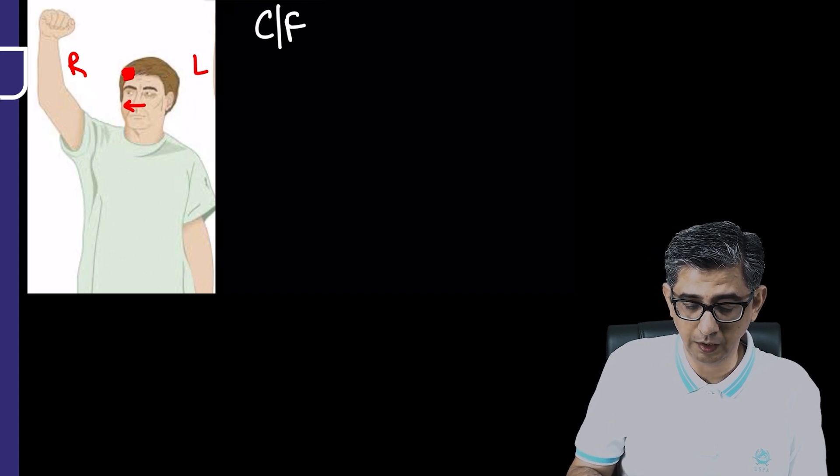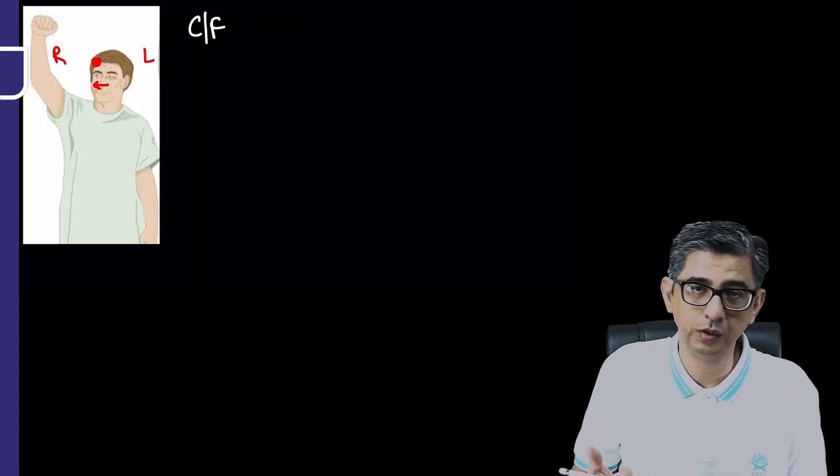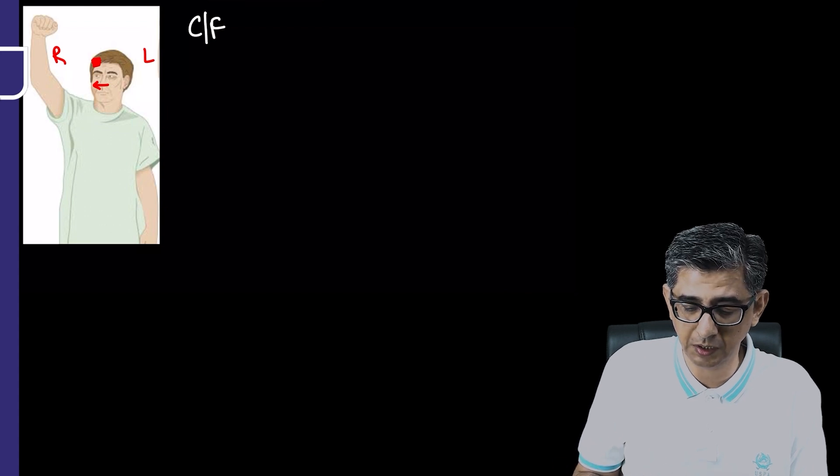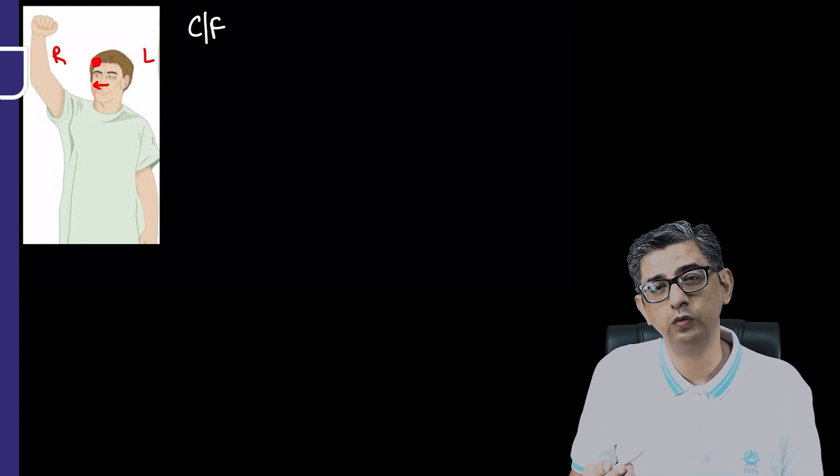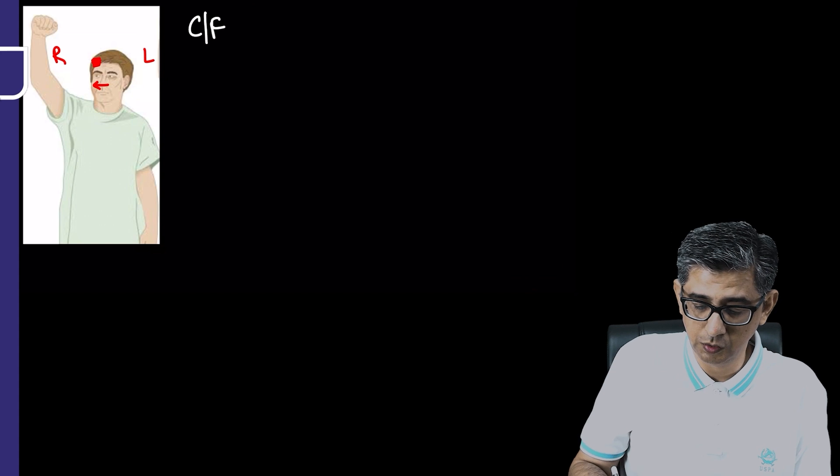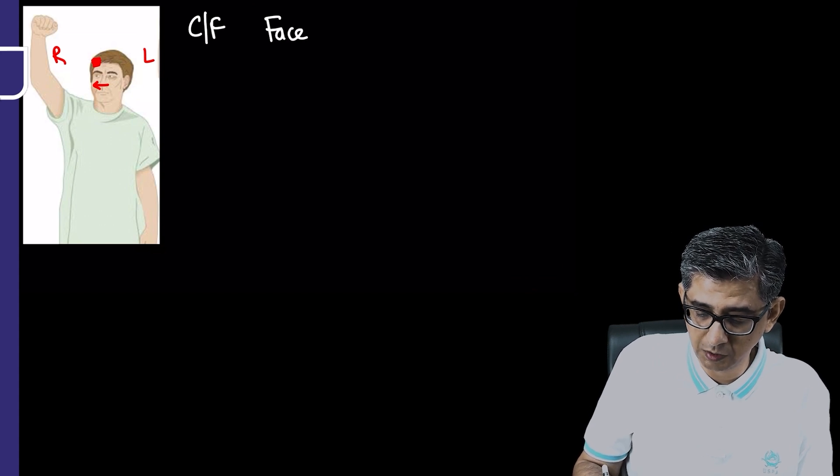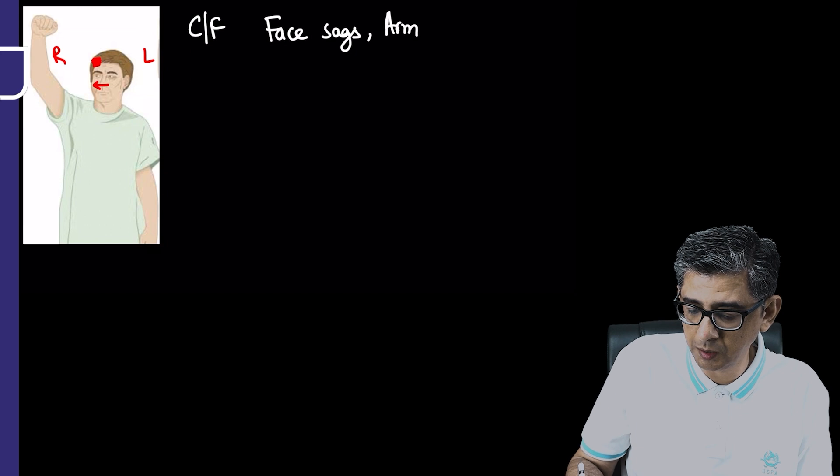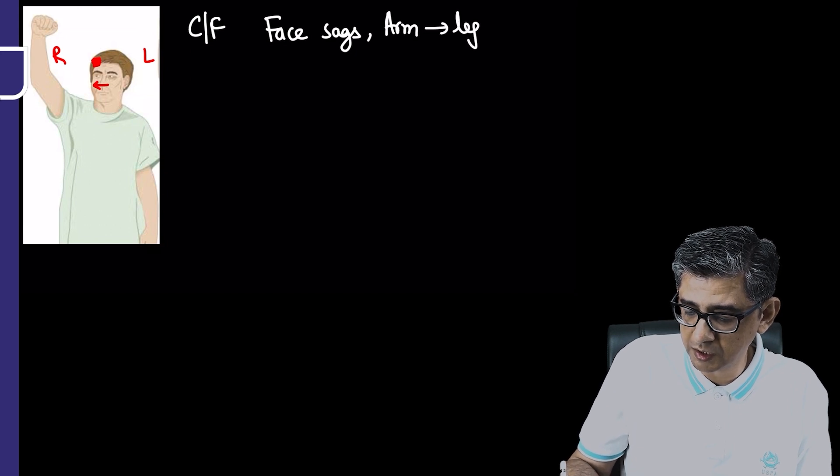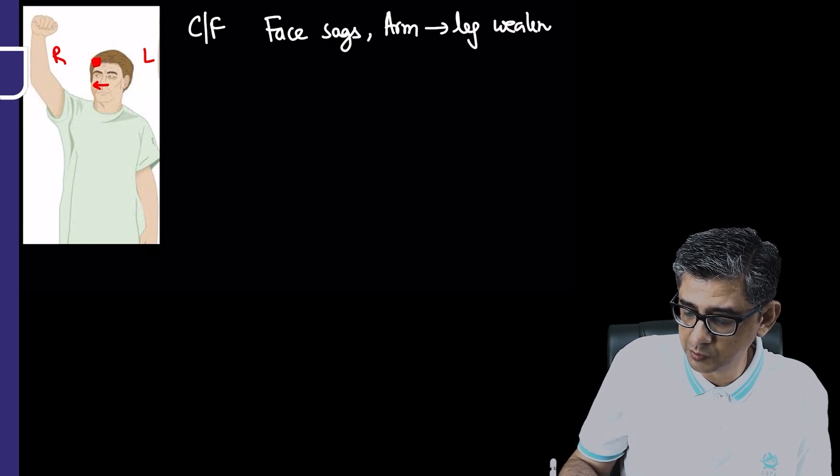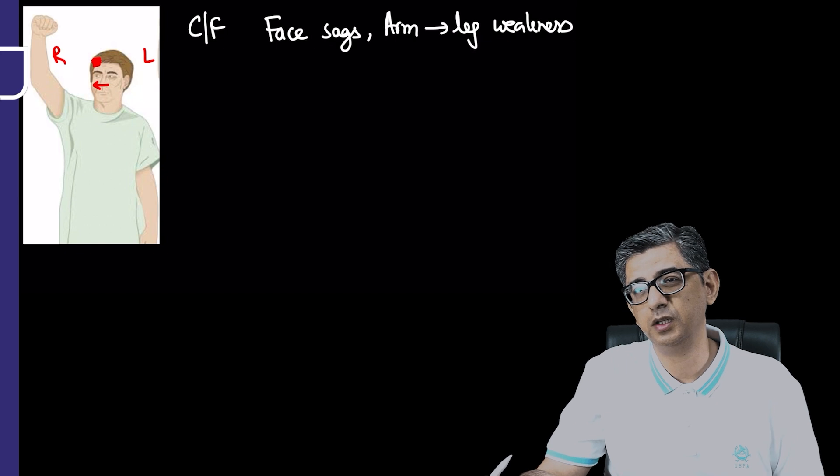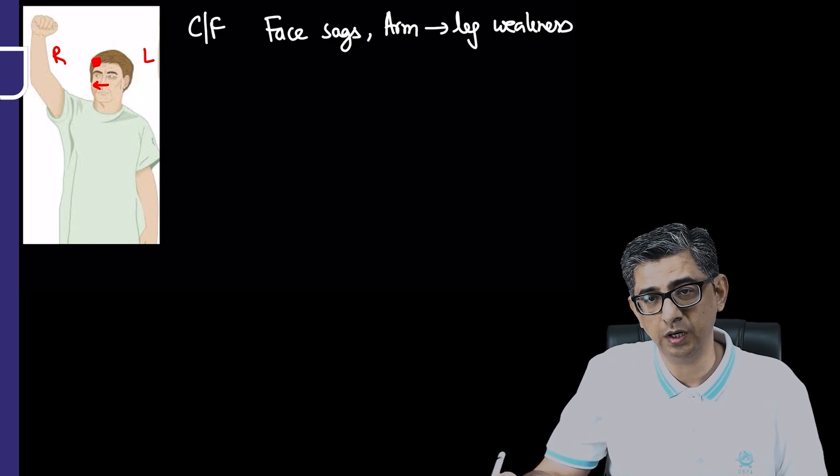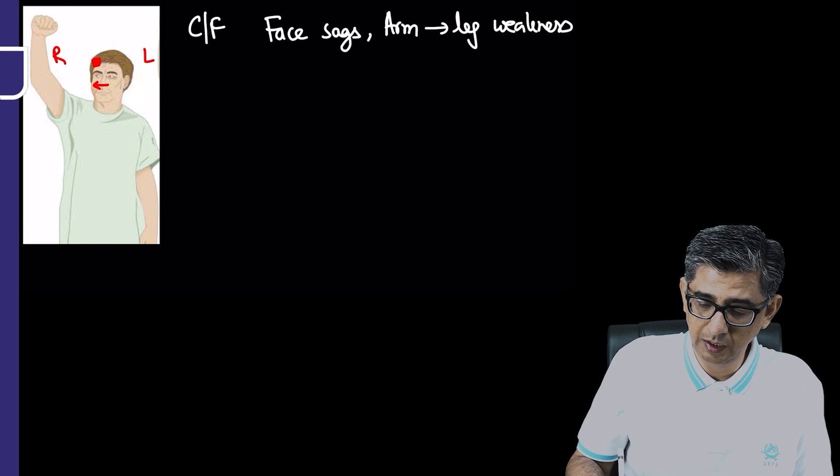The standard statement is whenever there's a cortical bleed, the person will look towards the side of the stroke. Clinical features include facial sagging, then gradually arm and leg weakness as the internal capsule gets involved, because the penetrating arteries are the ones getting afflicted.